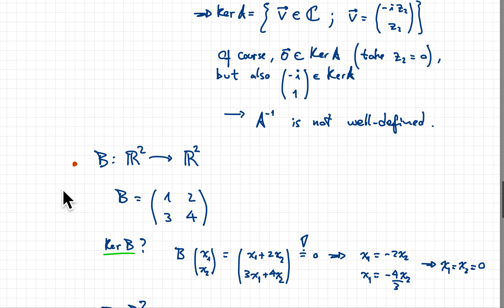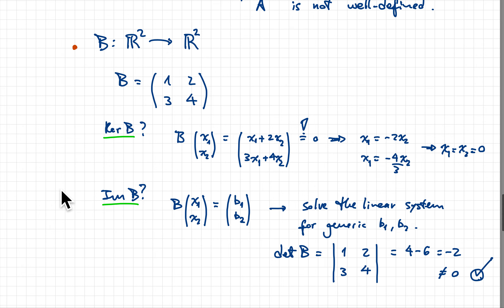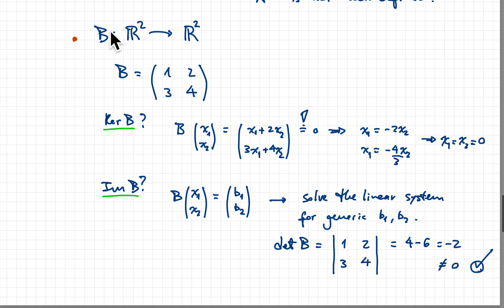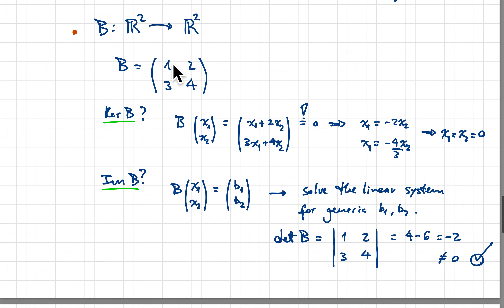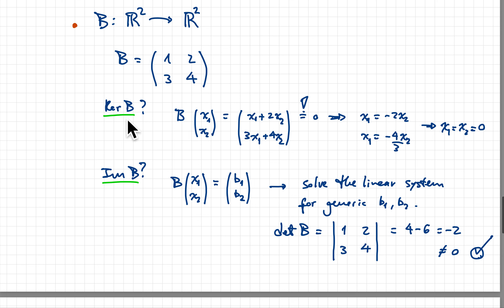Here's another example that does have a well-defined inverse. Suppose we have operator B mapping R2 to R2, given by the matrix with entries 1, 2, 3, 4. We can ask: what is the kernel of B? We apply B to a generic vector and force the result to be zero. The first equation gives x1 equals minus 2x2.